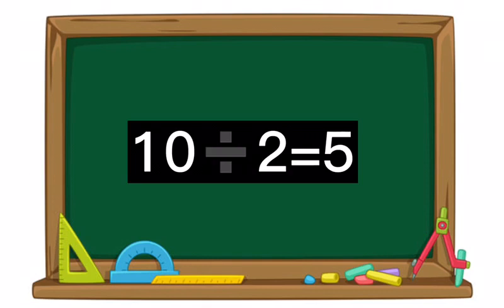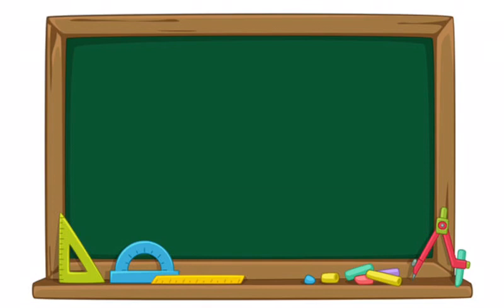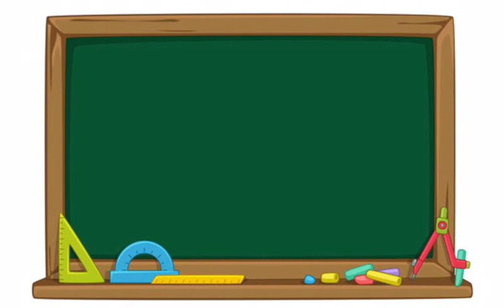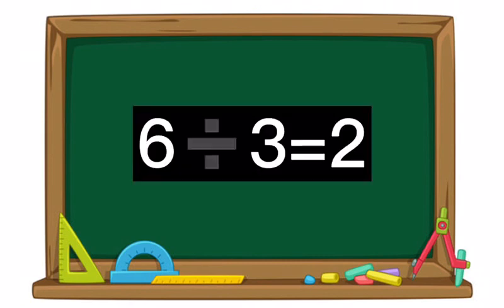Ten divided by two equals five. Three divided by three equals one. Six divided by three equals two.